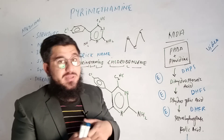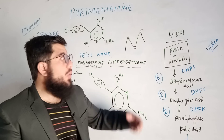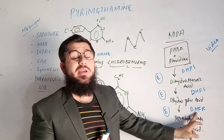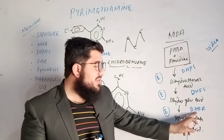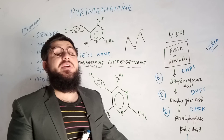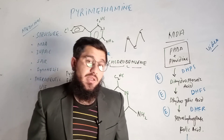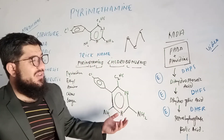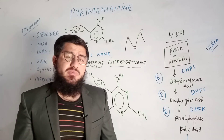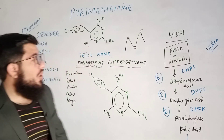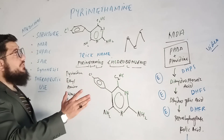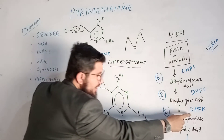Tetrahydrofolic acid is a precursor for purine-pyrimidine synthesis. If purines and pyrimidines are synthesized, then DNA can be synthesized. Pyrimethamine inhibits dihydrofolate reductase, so tetrahydrofolic acid is not produced, purine-pyrimidine synthesis is blocked, DNA synthesis is blocked, and ultimately the plasmodium cannot replicate. That is the mechanism of action of pyrimethamine.